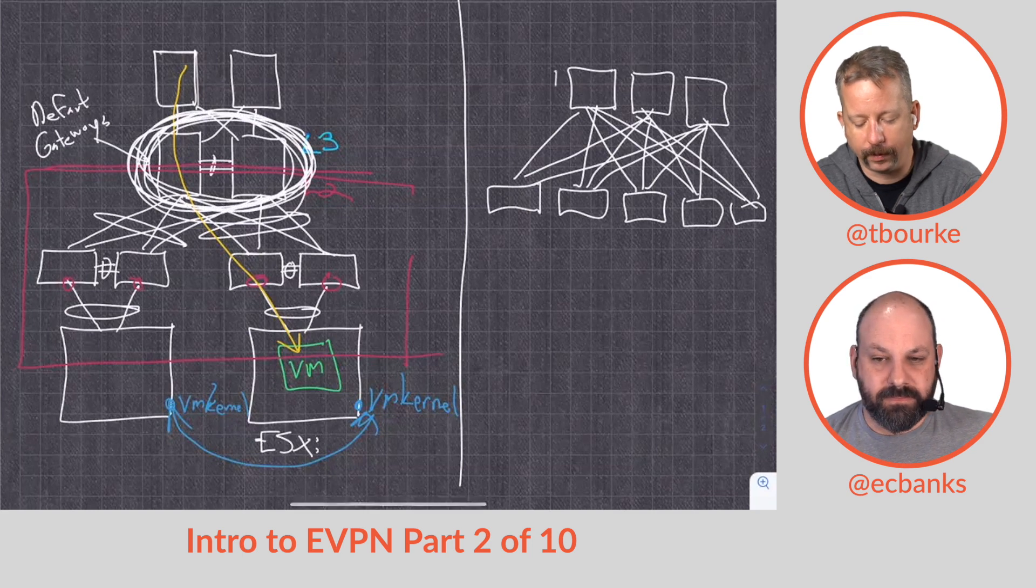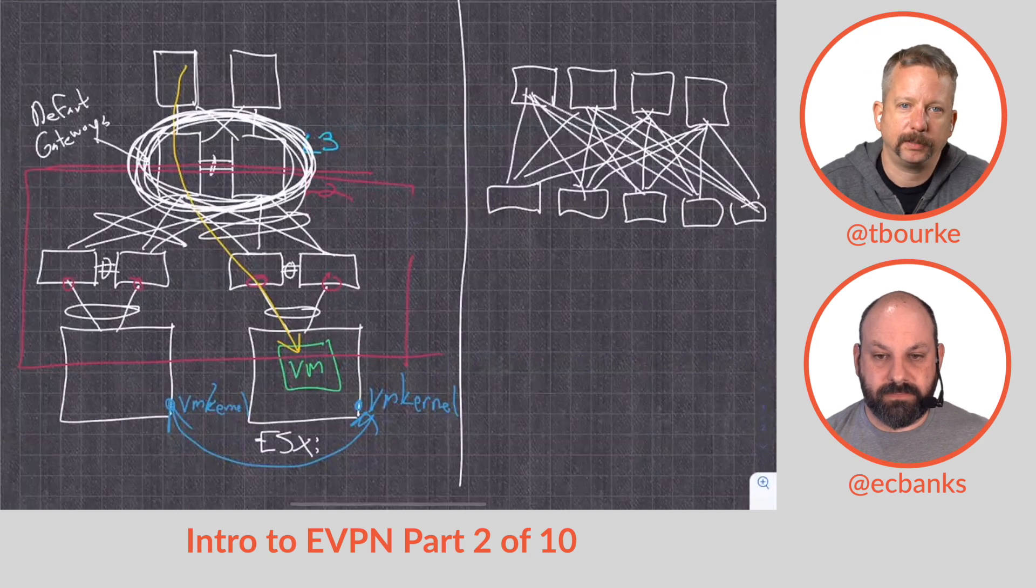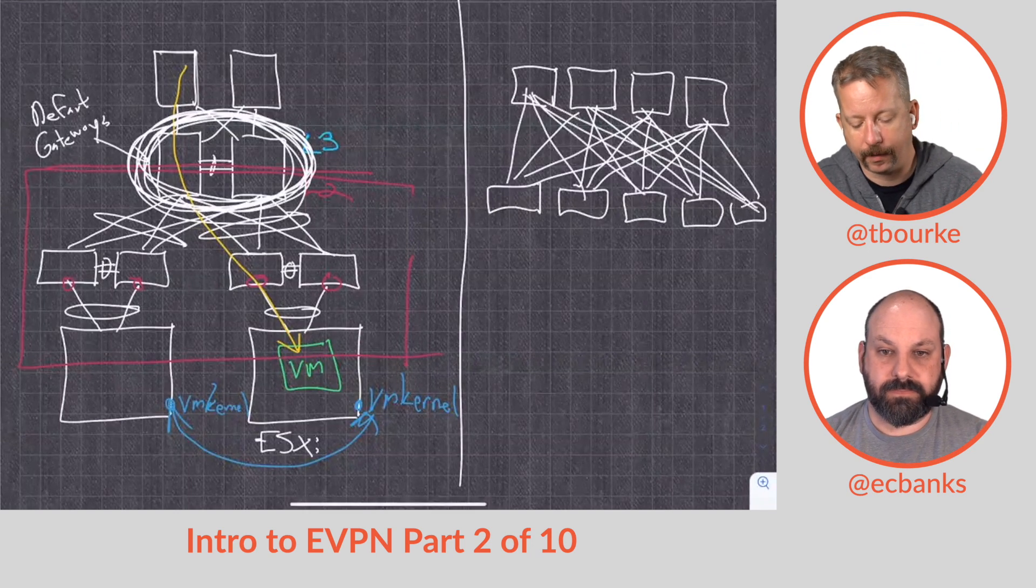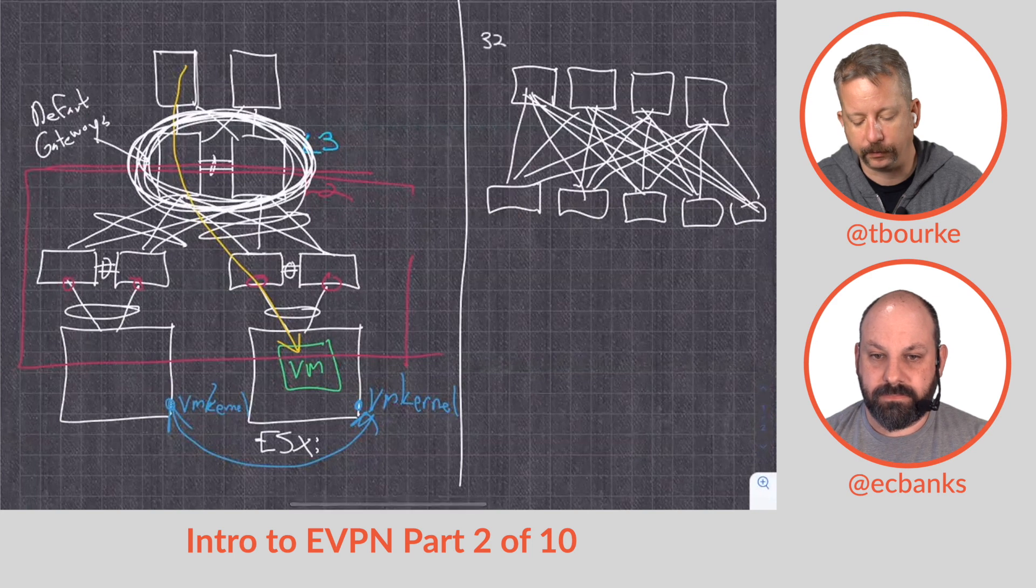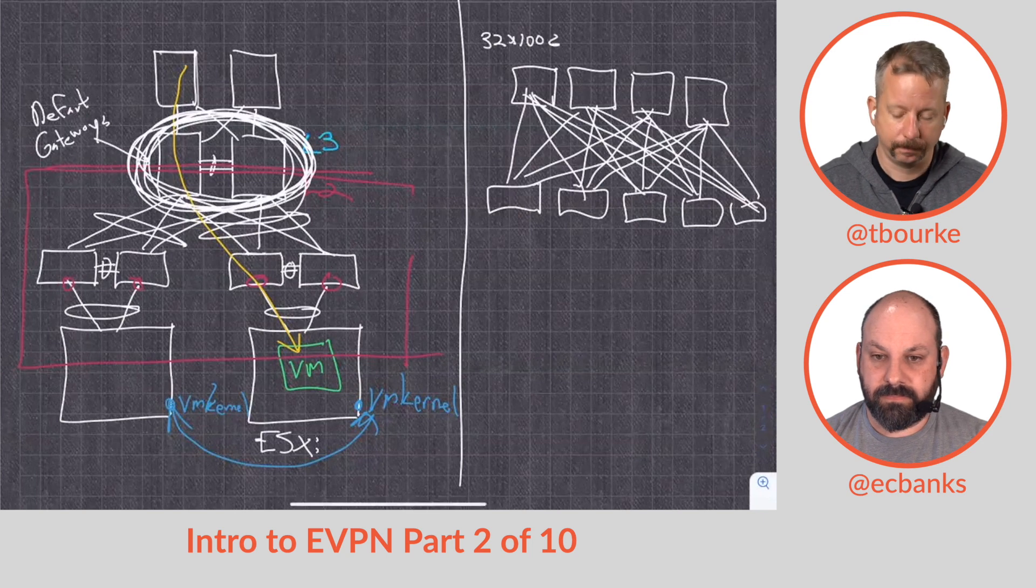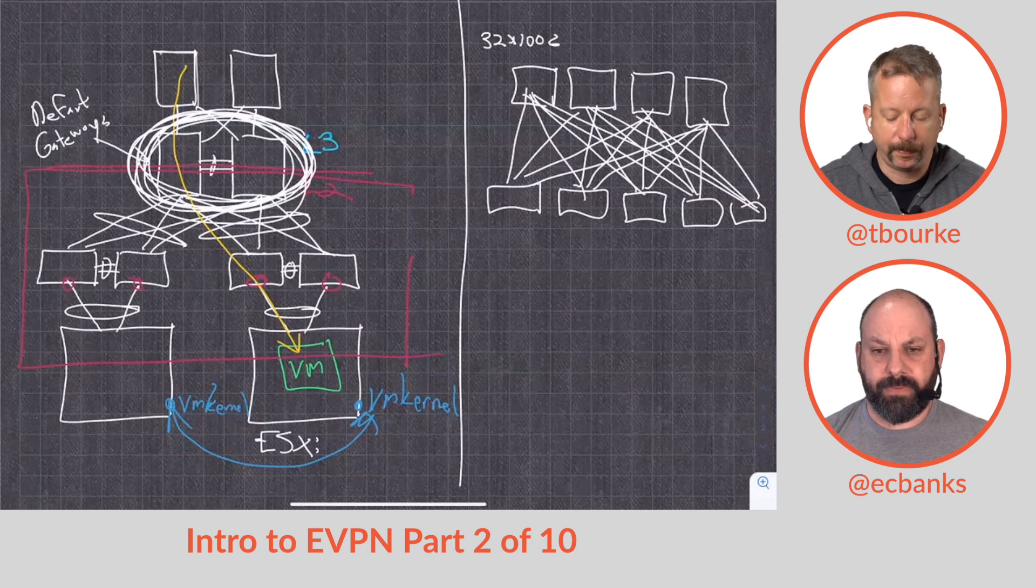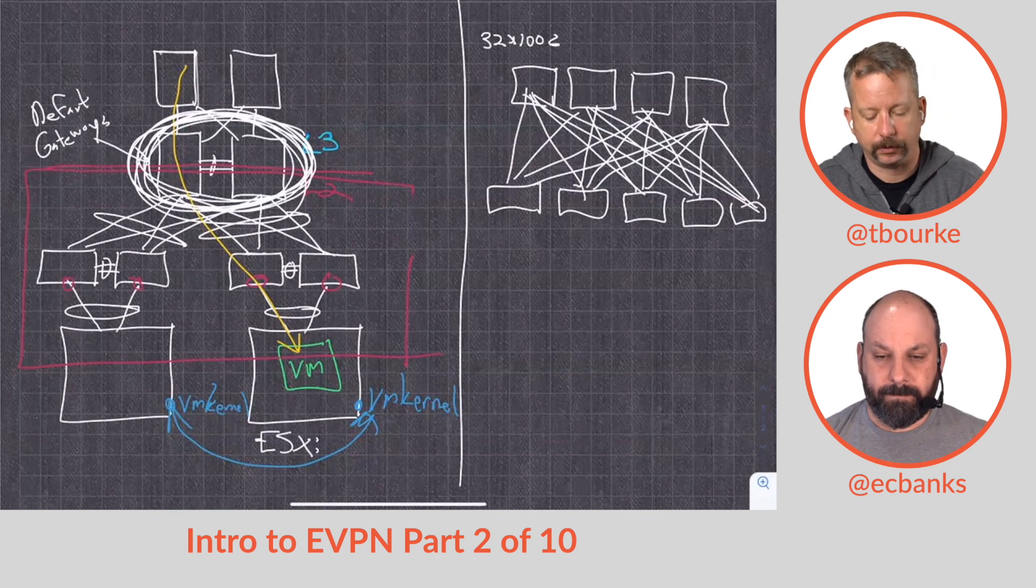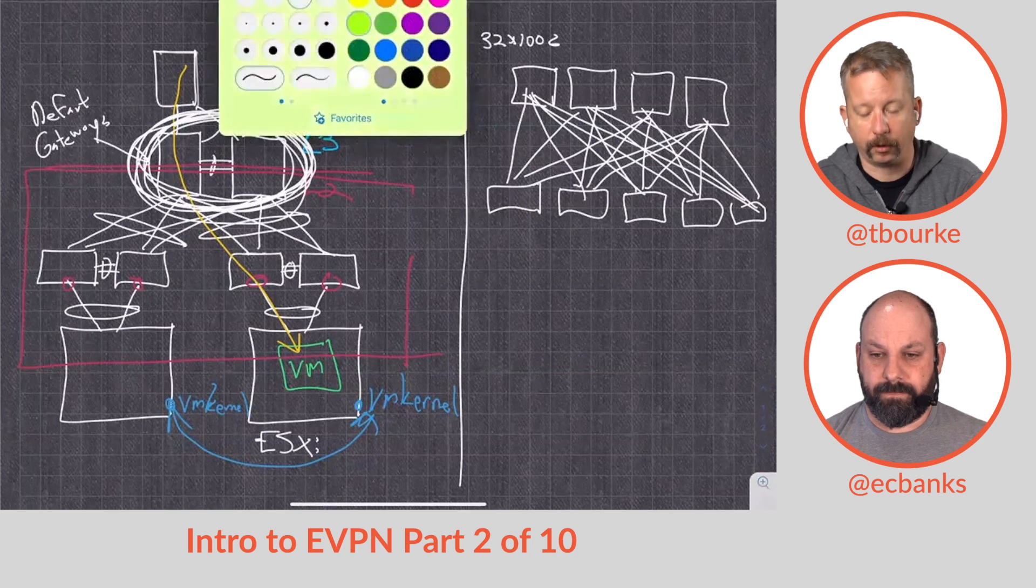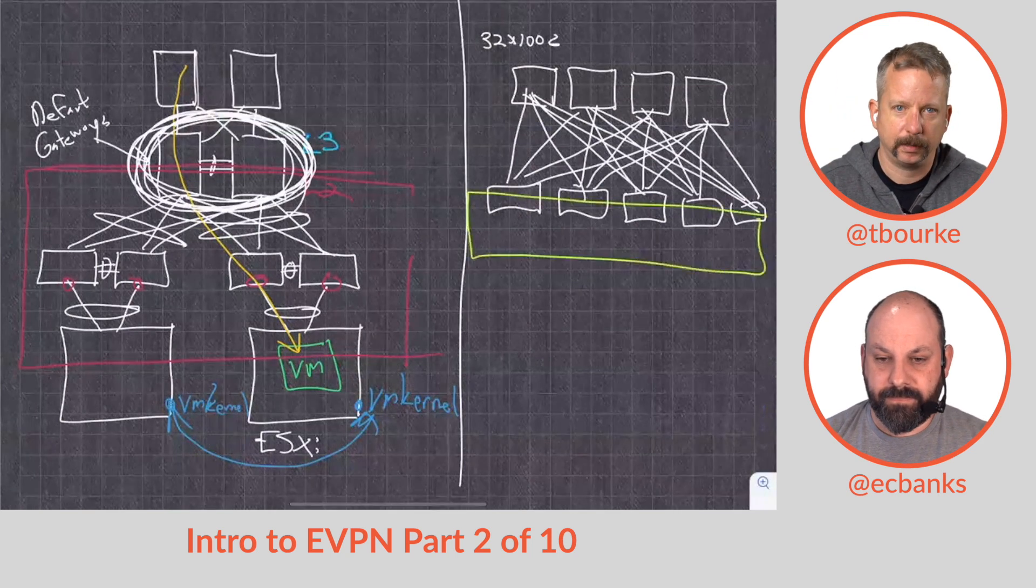If we can go to leaf spine, we can go with more traditional top of rack, end of row style devices that maybe have 32 or 64 100 gig interfaces, or now 400 gig interfaces. We don't have to buy the big chassis, and if we need more connectivity to our leaves, we just buy more. I don't want to spend too much time talking about why we're doing EVPN, but...